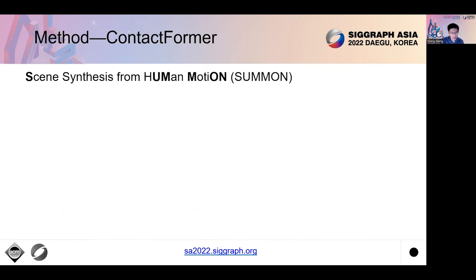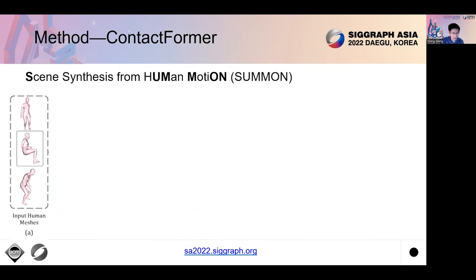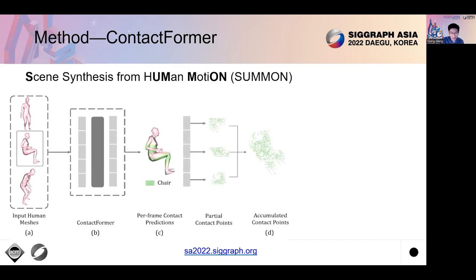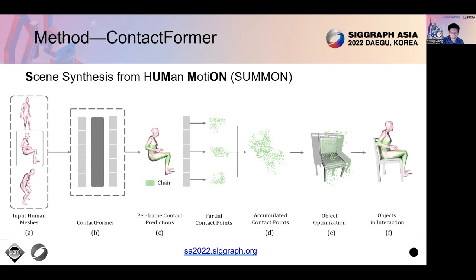We propose SUMMON, which stands for Scene Synthesis from Human Motion. First, we preprocess a sequence of body vertices as input. Then, we train our contact predictor, ContactFormer, to predict temporally consistent contact labels for each body vertex. Then, for each frame, we accumulate body vertices that are predicted as in contact with the scene, which we call contact points, and we cluster the contact points and sample an object from the object dataset and perform object optimization to align the object with the contact points.